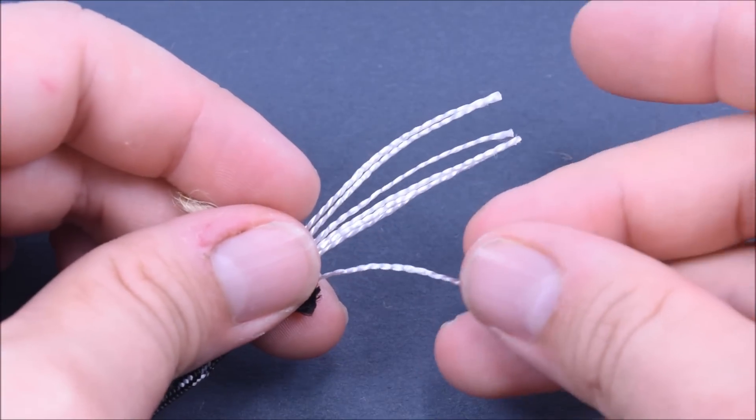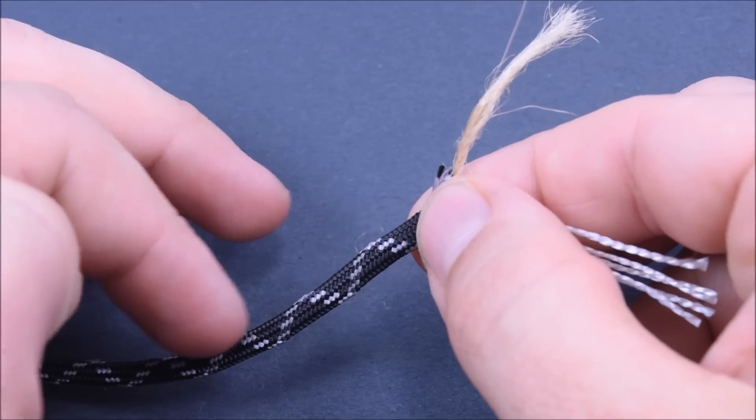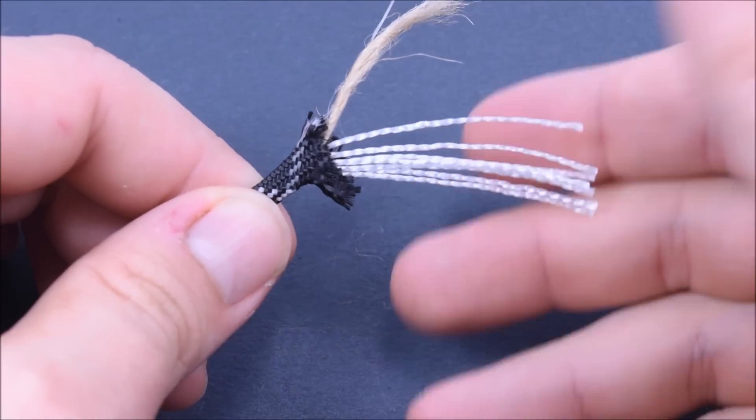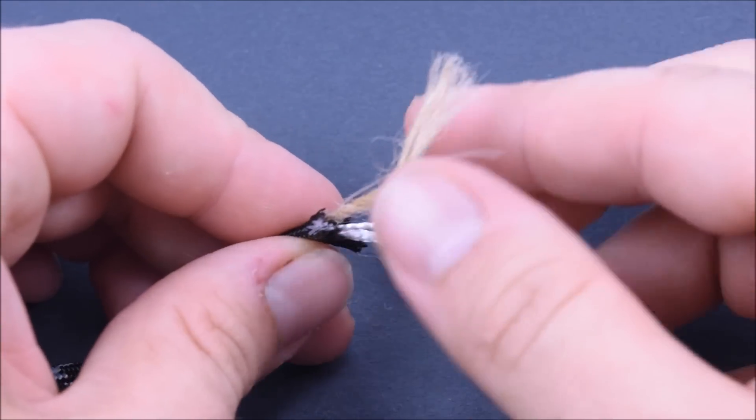Each strand is 75 pounds. And then the sheath is going to be 75 times 7. There's going to be a little left over, and that's where the sheath makes up the rest of the 550.